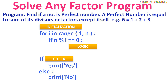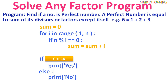In the initialization, since we need to find the sum, we initialize sum to zero. In the logic section, if the number is a factor we add it to the sum. In the check section we compare the sum with the number; if they are equal it is a perfect number, otherwise it is not.